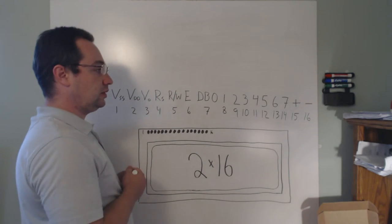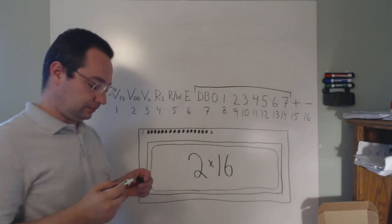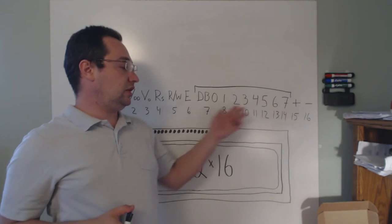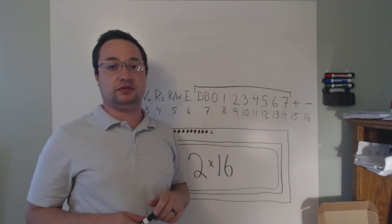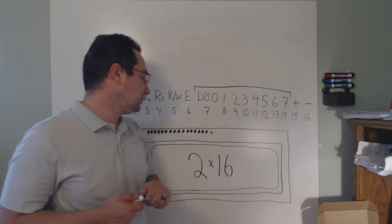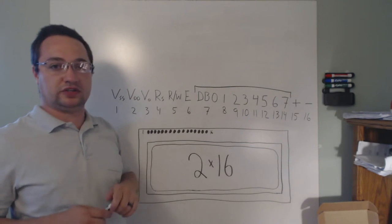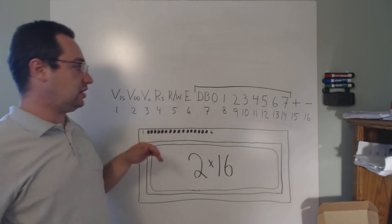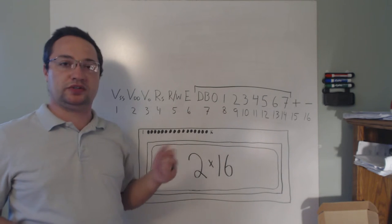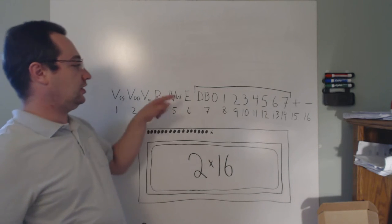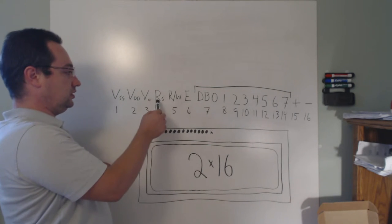This screen supports a parallel bus that is eight bits wide, so data comes in and out of the screen via the DB0 through DB7 pins — these are the actual data pins. Every time the master wants to move data in and out of the screen — the screen is always a slave — it will strobe the enable line.